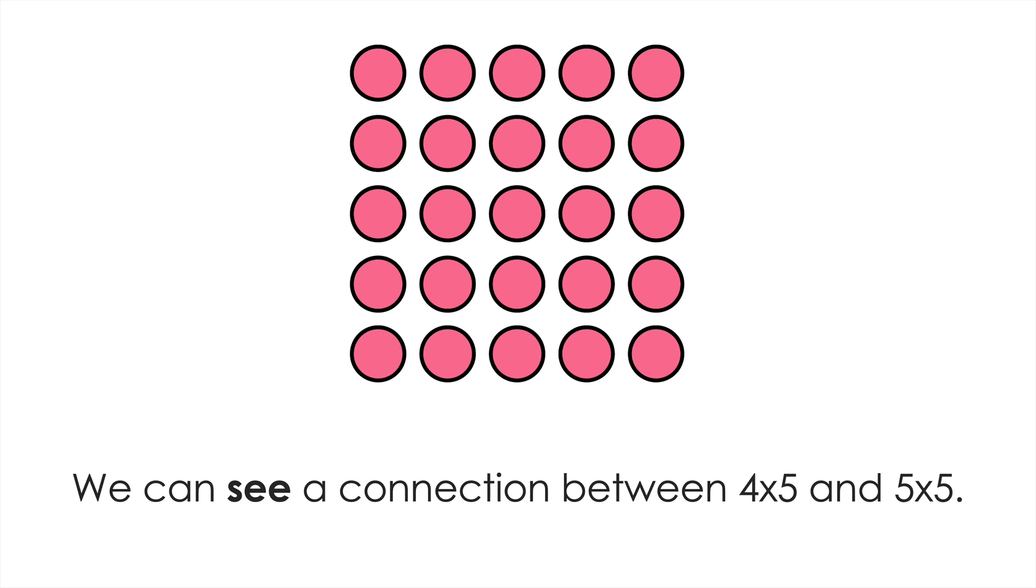We can use arrays to make visual connections between different multiplication facts. This visual helps us see that if we begin with four groups of five and add one more group of five, we now have five groups of five. We can see a connection between these two facts, 4×5 and 5×5. It helps us understand that in order to solve 5×5, we can use what we know about 4×5 and then just add one more group of five.